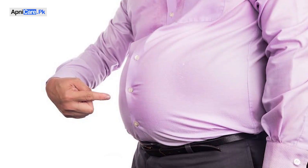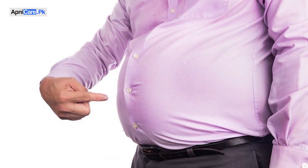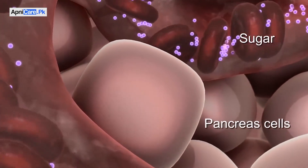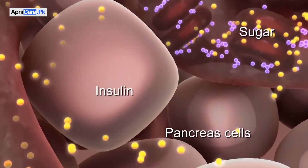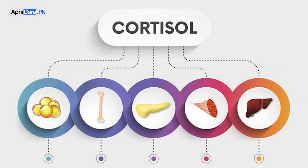Today, we are going to talk about an interesting topic about how you can reduce your belly fat. We have already talked about belly fat. Belly fat is usually because of two hormones: insulin and cortisol, which is called the stress hormone.